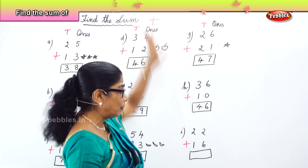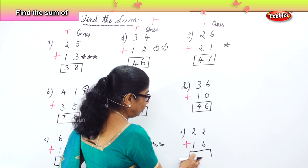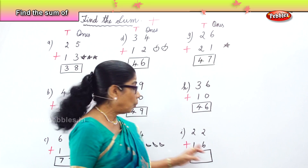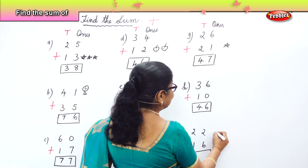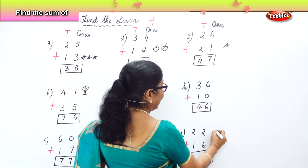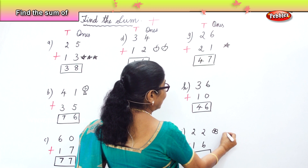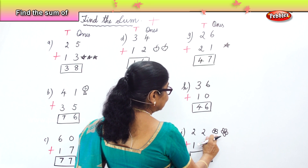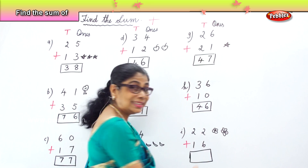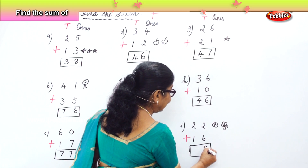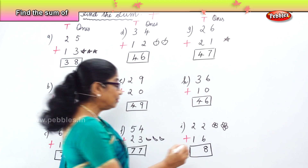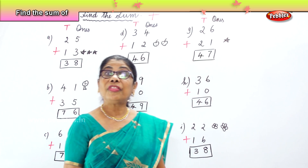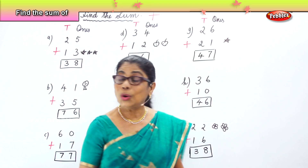Find the sum of twenty-two plus sixteen. In the ones: two ones and six ones. After six — seven, eight — six plus two make eight ones. Then two tens plus one ten is three tens. The sum of twenty-two plus sixteen is thirty-eight.